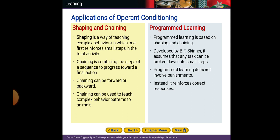Applications of operant conditioning include shaping and chaining. Shaping is a way of teaching complex behaviors in which one first reinforces small steps in the total activity — for example, a mother modeling behavior at home for her children. Chaining is combining the steps of a sequence to progress toward a final action. Chaining can be forward or backward, and can be used to teach complex behavior patterns to animals.